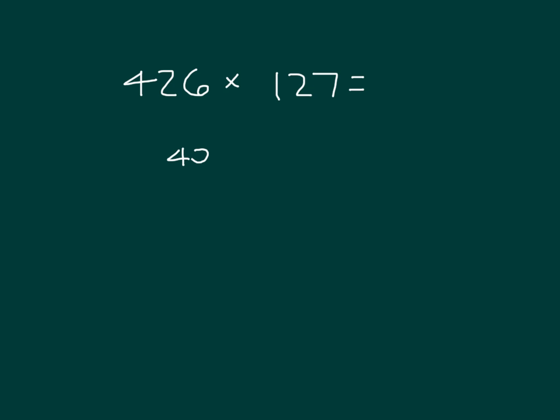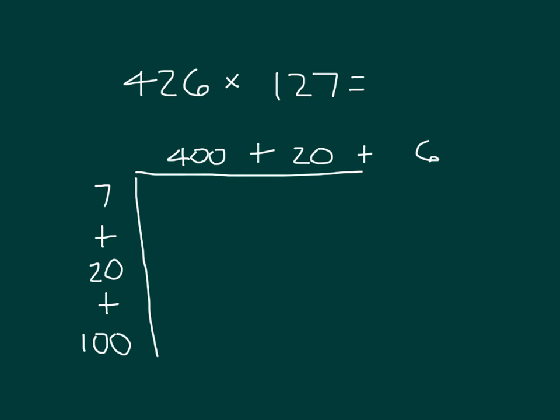We'll first break up 426 into 420 and 6. And then we will also break up 127 into 7, the ones place, and then 20 for the tens place, and that one is worth 100. Drawing our area model here.